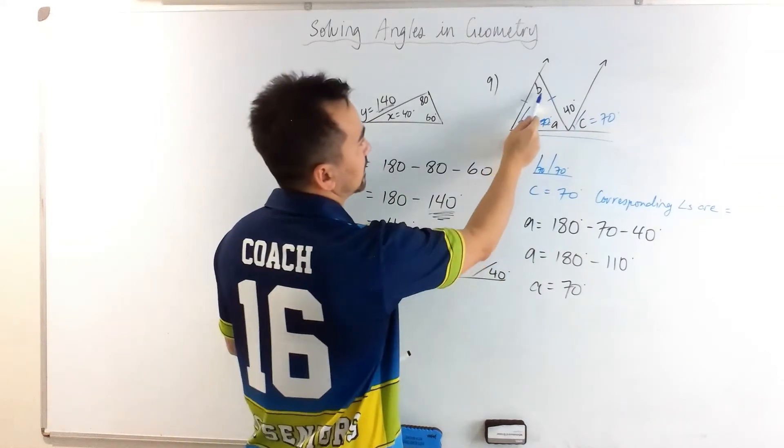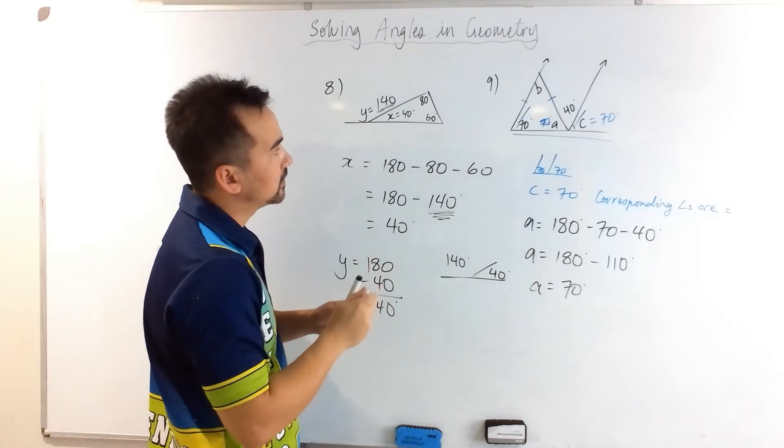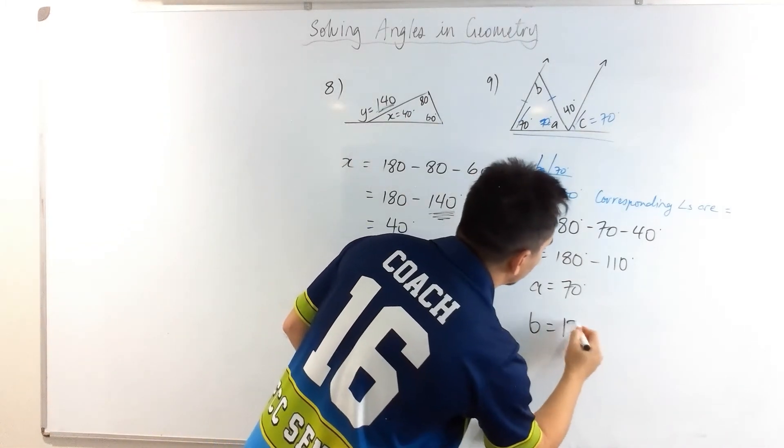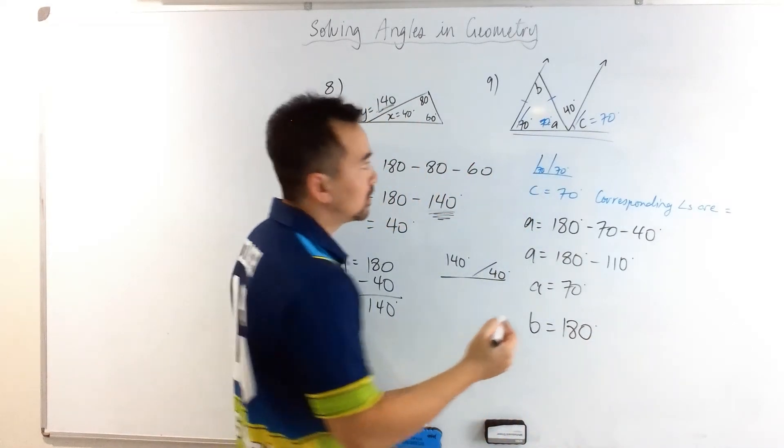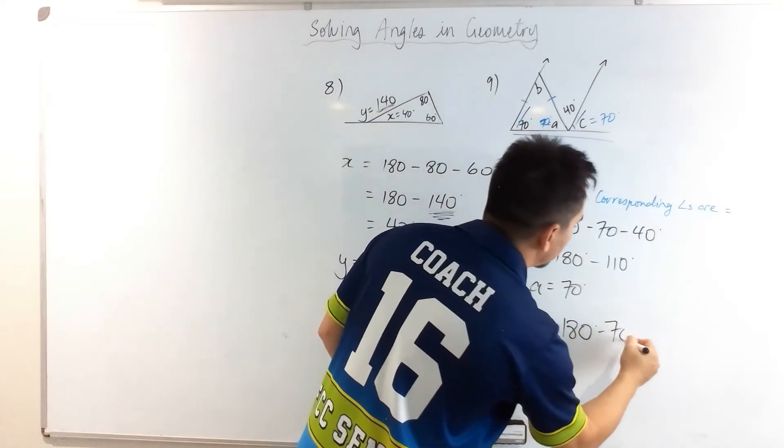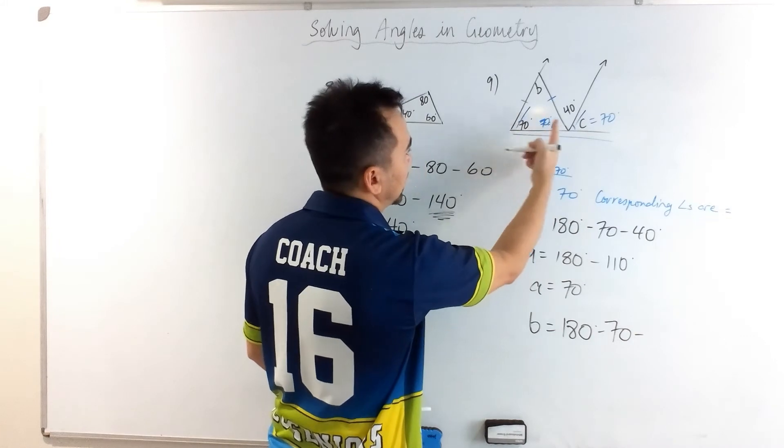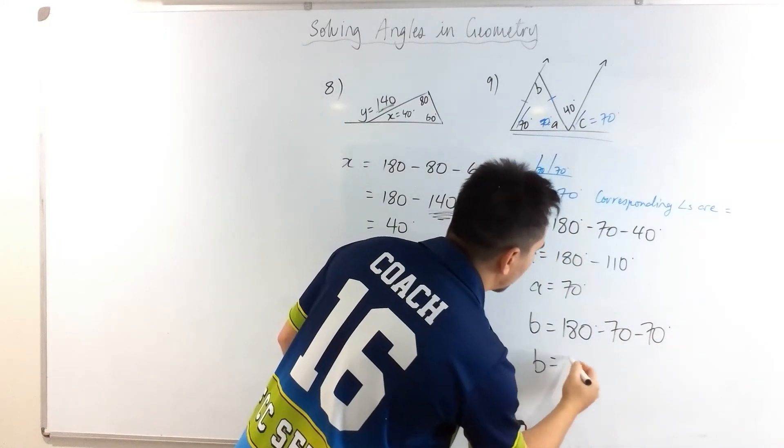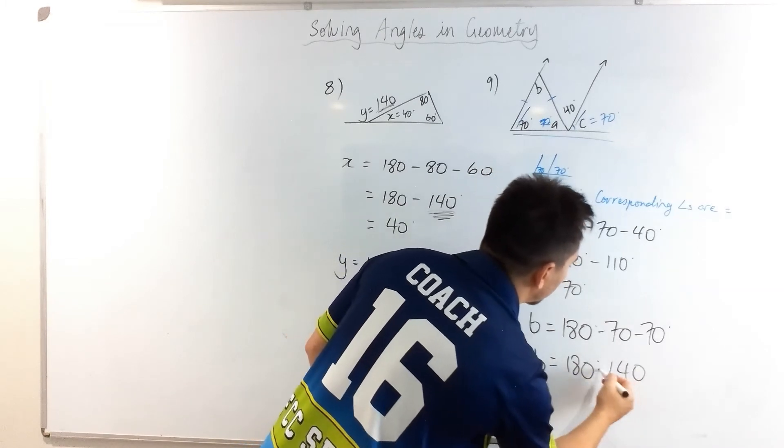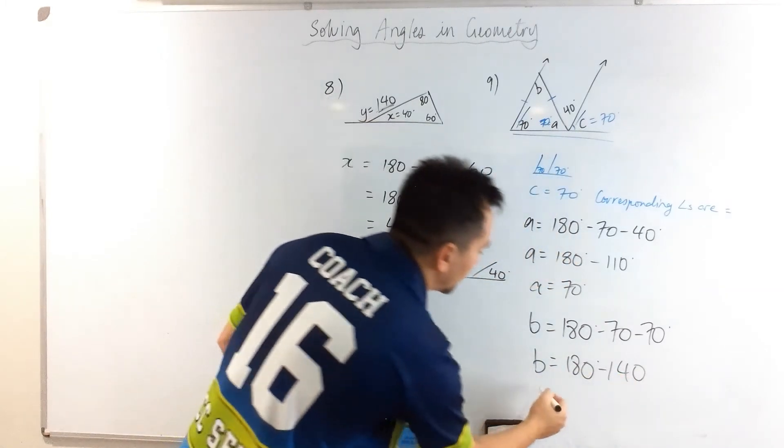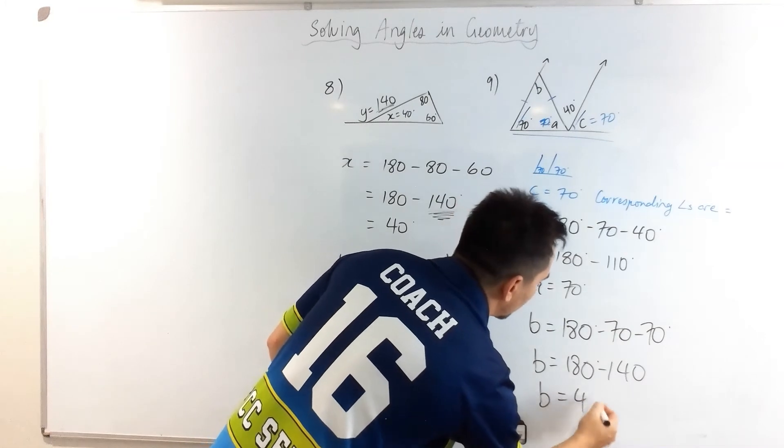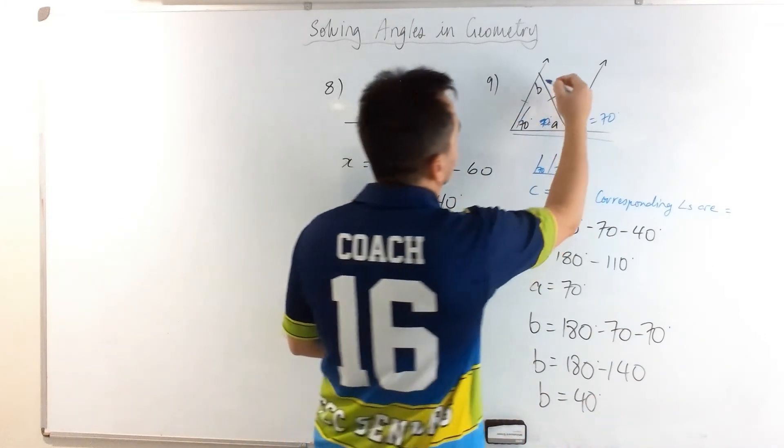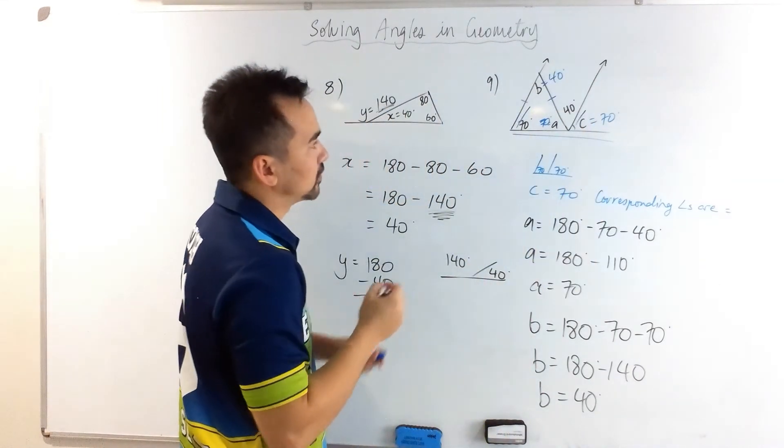And that means that the b-value will be 180 degrees in a triangle. We're gonna subtract 70, and then we'll subtract this 70, which means we are subtracting 140 degrees from b, which is 40 degrees. So b is 40 degrees.